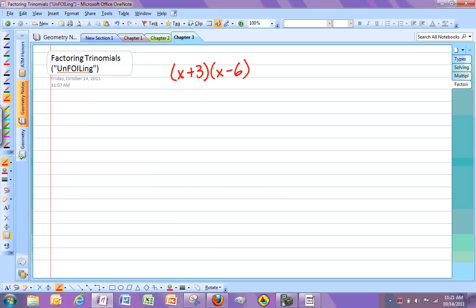x plus 3 times x minus 6. And then the term a lot of students like to use is foiling. You do the first terms, you get x squared. You do the outer terms, you get minus 6x. You do the inner terms, you get plus 3x. And you do the last terms, you get minus 18. And then this turns into x squared minus 3x minus 18.